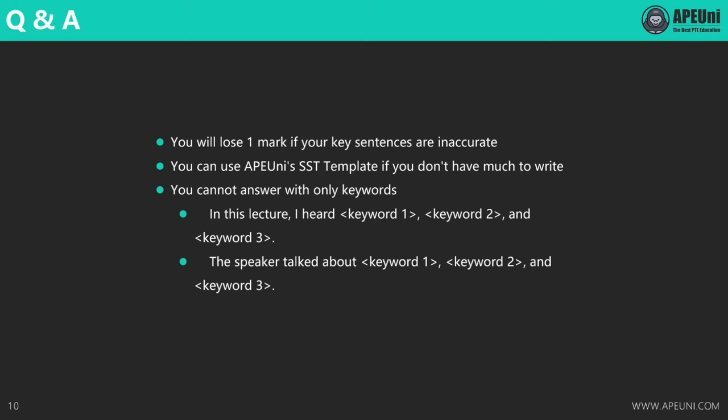To sum up, from the four mock test experiments, we can draw three important conclusions about the scoring in SST. First: if the key sentences you selected are inaccurate, you will lose one mark in content, but if you do well in the other dimensions like grammar, spelling, and form, you will still get an overall good score. Conclusion two: you can use the APE SST template, but only use it when you don't have many key points to write; if you have taken down a lot of notes, write without any template to get a higher content score. And the last conclusion: you should not answer SST with only keywords — you will be scored zero for the whole question. The content score in SST is given by looking for relevant meanings expressed in your answer, not by detecting keywords. This is different from the scoring algorithm in Retell Lecture.